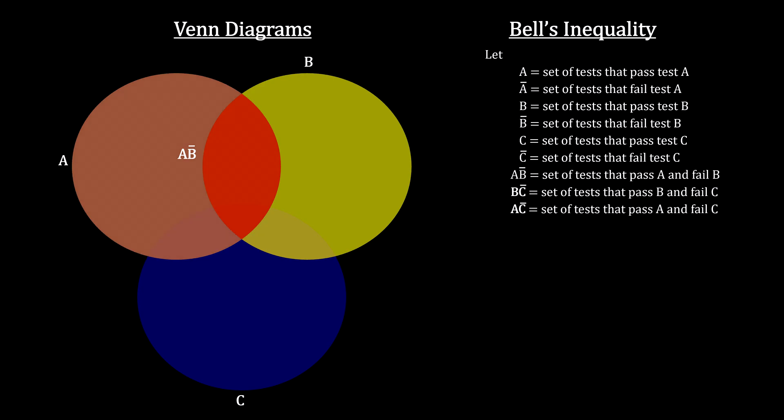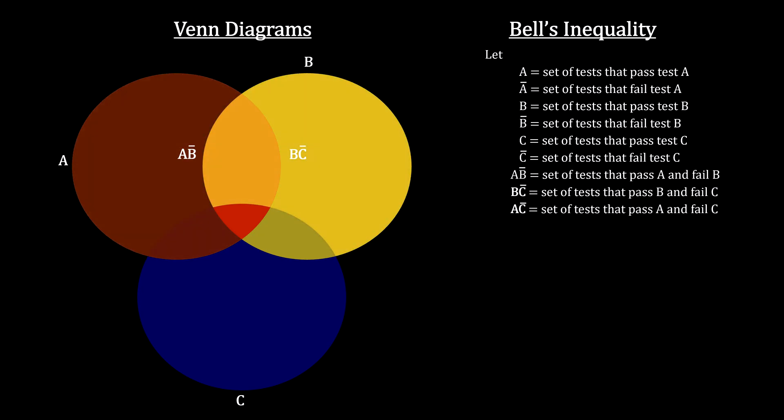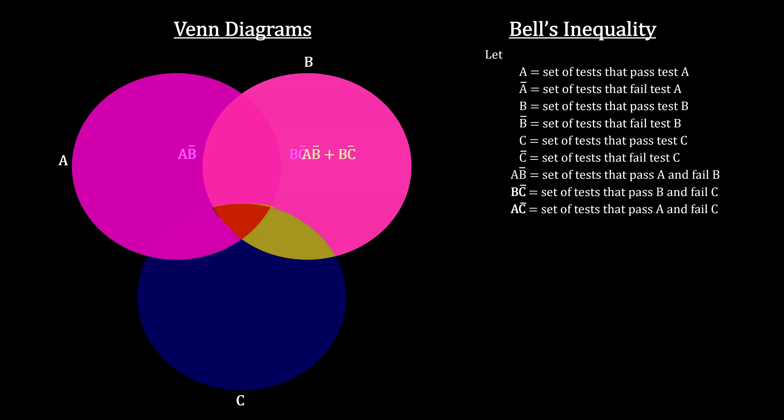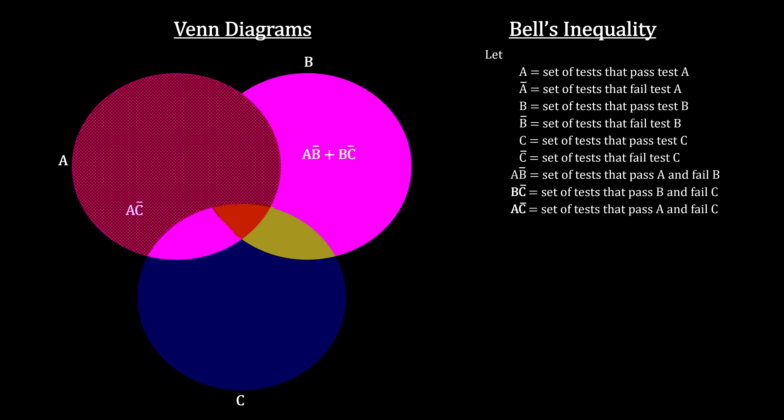Here's the subset A not B. And B not C. When we combine them, you can see that A not C is a subset.